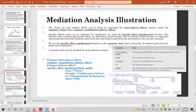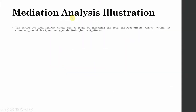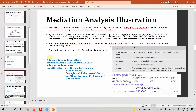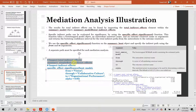So this is the illustration — let's briefly discuss this. The results of total indirect effects can be found by inspecting the total_indirect_effects element within the summary_model object: summary_model total_indirect_effects. The first step is to assess whether or not your indirect effects are significant. This is fine when you've got one mediator, but if you've got more than one mediator, we need specific indirect effects — we'll look into that later.